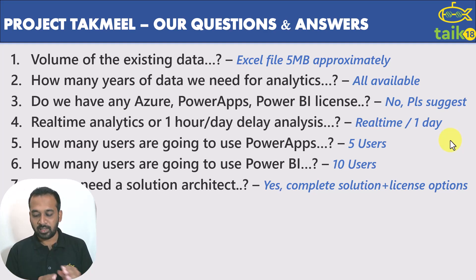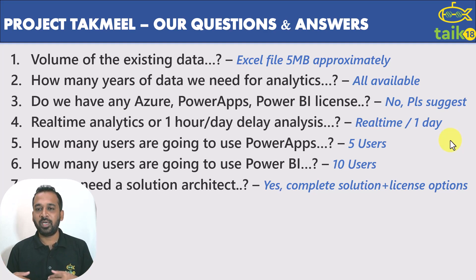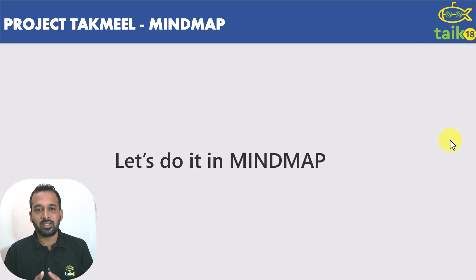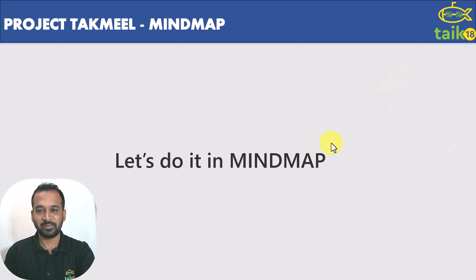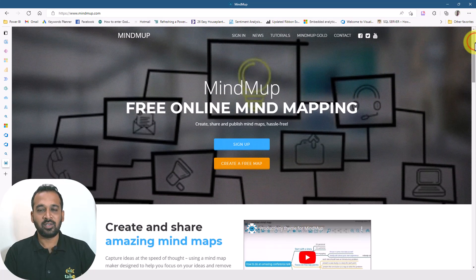Moving on — we have understood the business requirements. The next thing we need to do as a development company is to build a solution architecture, then resource planning and budgeting, and then submit the quote to them. If they are okay with that, they will give us an order. The next step is to do this in a mind map. Hope you're aware of mind map — if not, it's a good time to learn that. You're probably aware of Lucid chart and other chart tools where we can map process flows. Mind map is also one of its kind.